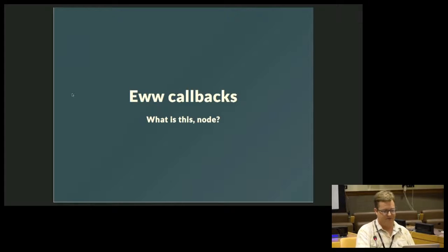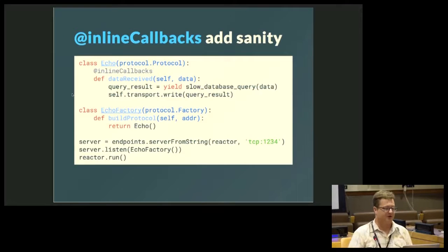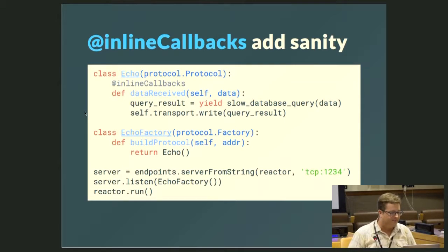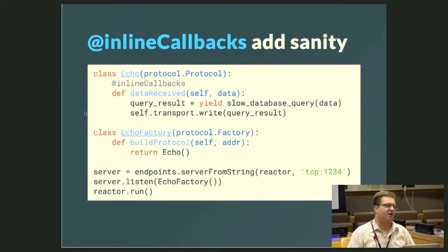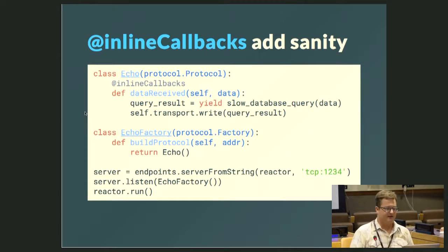But of course, ew, callbacks. The great thing in Twisted is that they added the ability to wrap a function using a decorator called inline_callbacks that will allow you to yield the deferred. So we don't have to use callbacks, but it does add the requirement that we add a decorator. There's one peculiarity here that doesn't exist in asyncIO, which is that we can't actually return. This function becomes a generator where we're yielding, and there could be lots of yields in there, but we can't actually return anything.